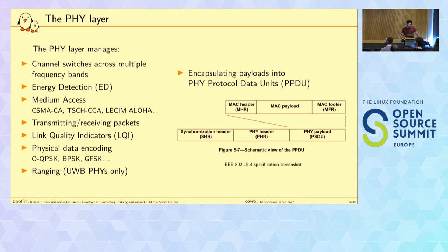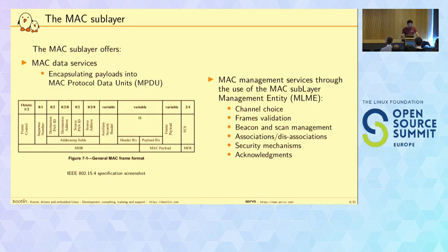There are many physical data encoding algorithms. You can possibly perform ranging as well, but only on ultra-wideband PHYs. Finally, you get data from the upper layer — namely the MAC layer — and you encapsulate it into a PHY protocol data unit, a PPDU, with a header and a synchronization header. What's inside, the payload of the PHY frame, is defined there.